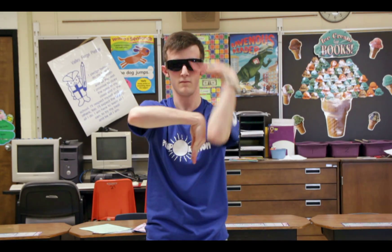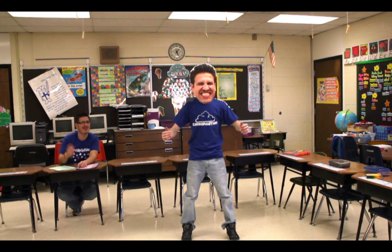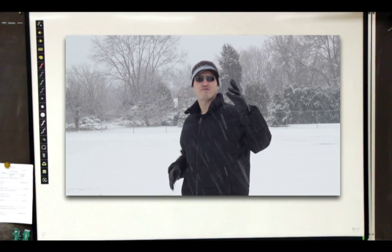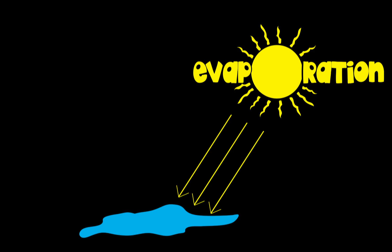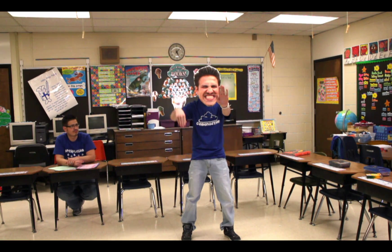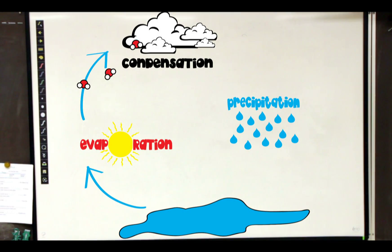Evaporation is really neat because it starts with the sun's heat. The heat makes the water molecule bonds apart, and that's how the Water Cycle gets its start. Then it flows way up in the air, and the water vapor flows way up there. But it cannot stay up there indefinitely, because as it rises it cools, you see.